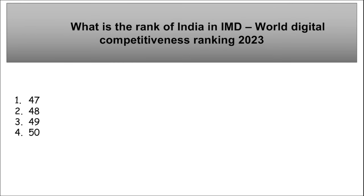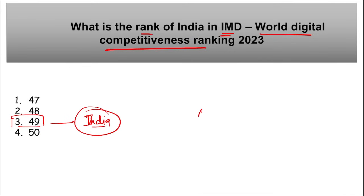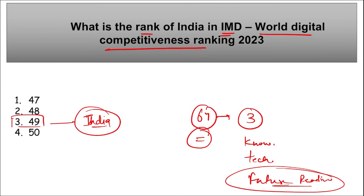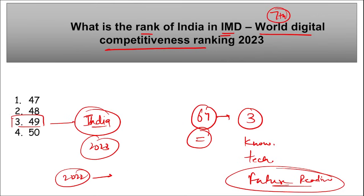What is the rank of India in IMD's World Digital Competitiveness Ranking? India की rank है 49। 64 economies को यहाँ पर तीन factors पर assess किया जाता है — knowledge, technology, और future readiness। यह 7th edition था IMD की World Digital Competitiveness Ranking का। 2023 में India की rank 49 रही, जबकि 2022 में India की rank 44 थी।